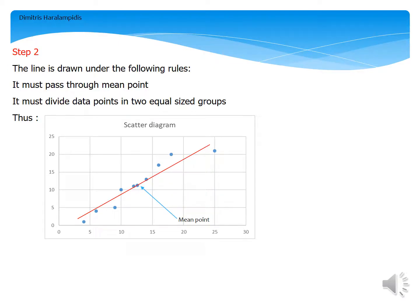Then in second step, the line is drawn under the following rules. At first, it must pass through the mean point. And then, it must divide our data points in two equal size groups.